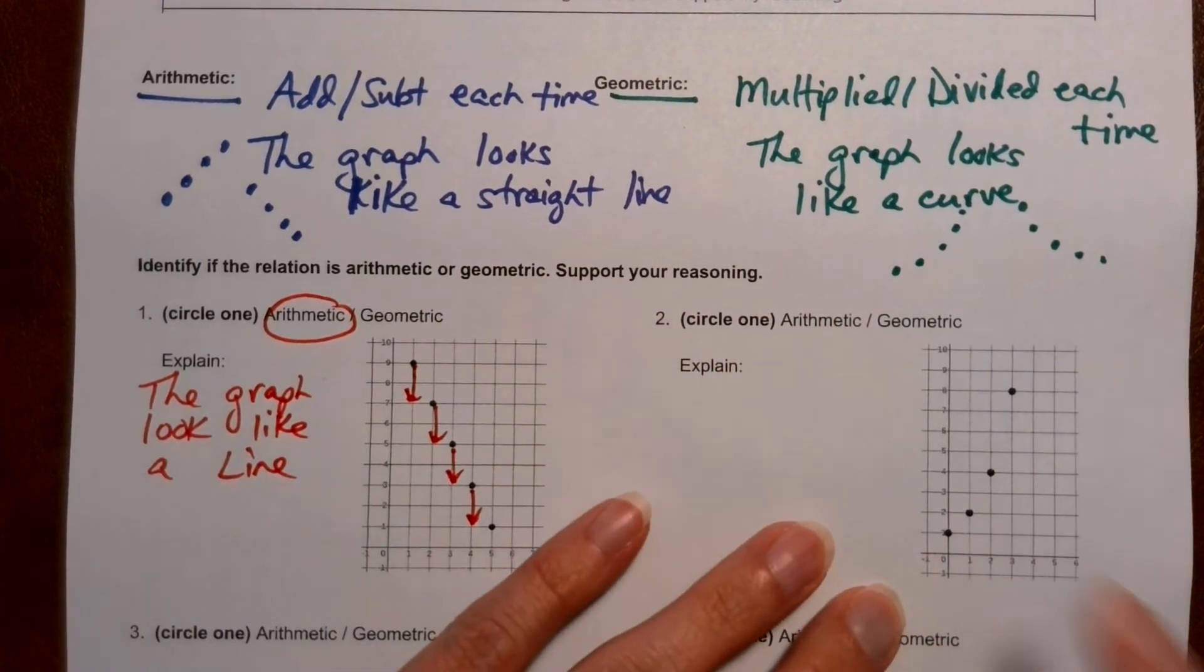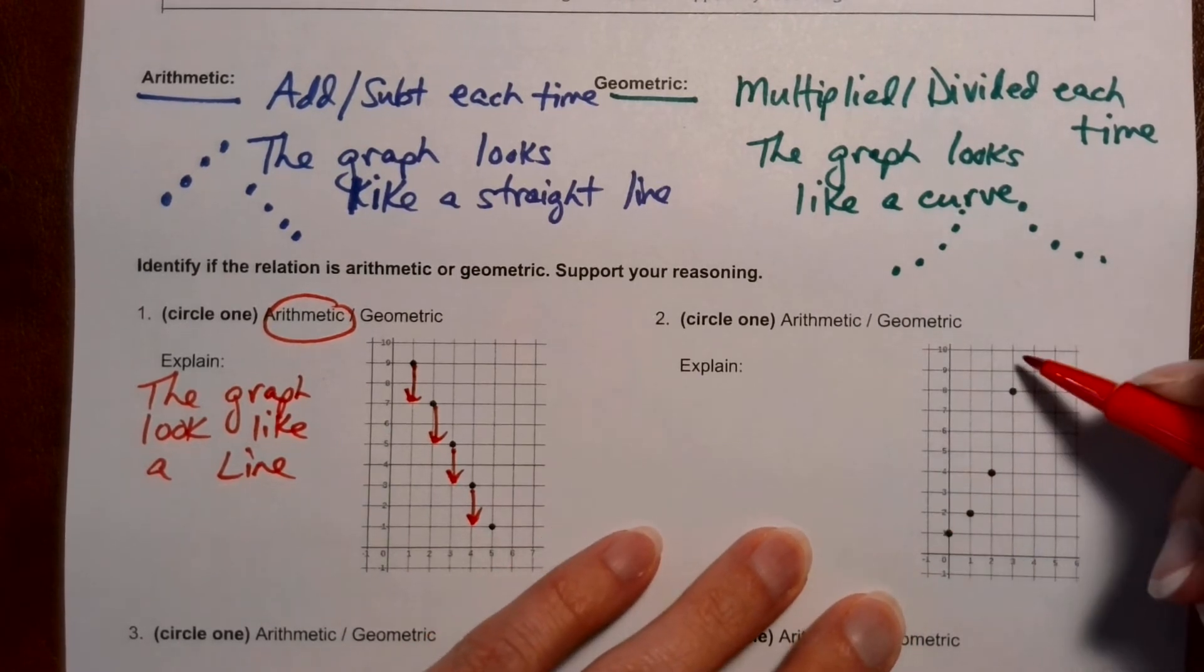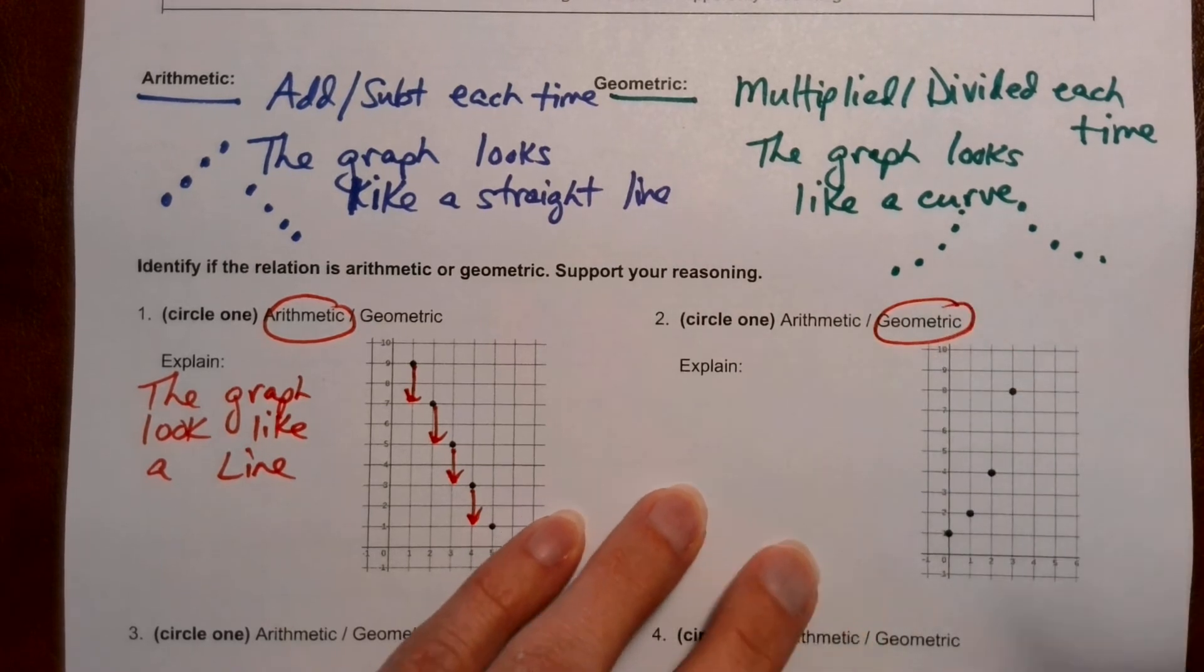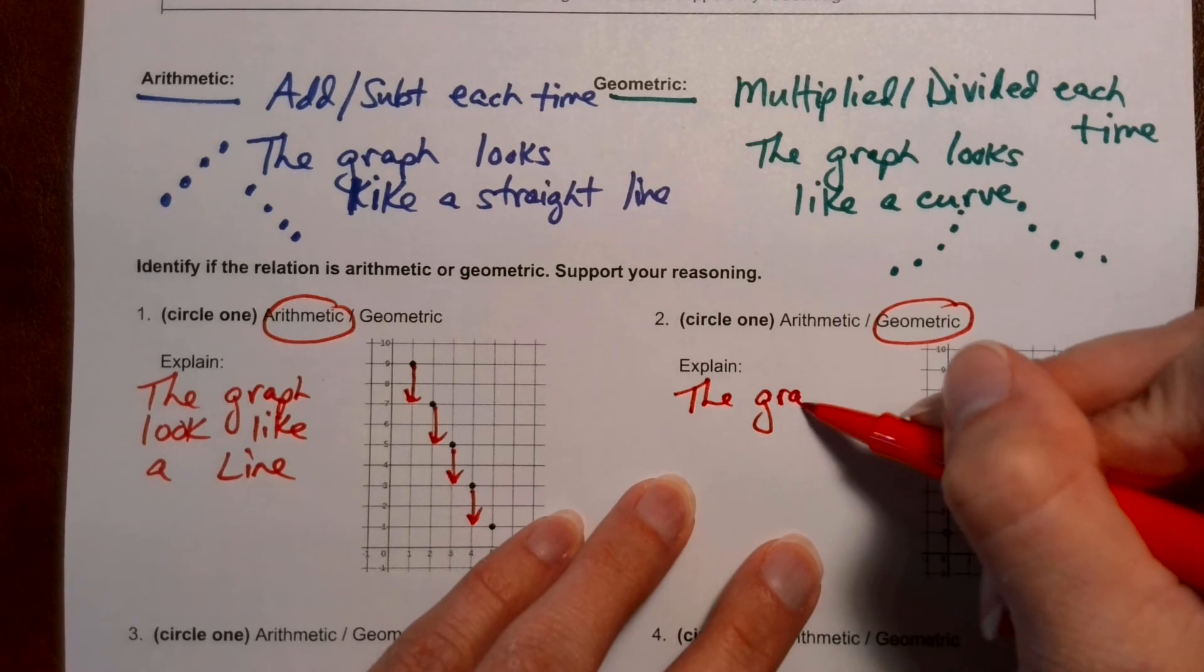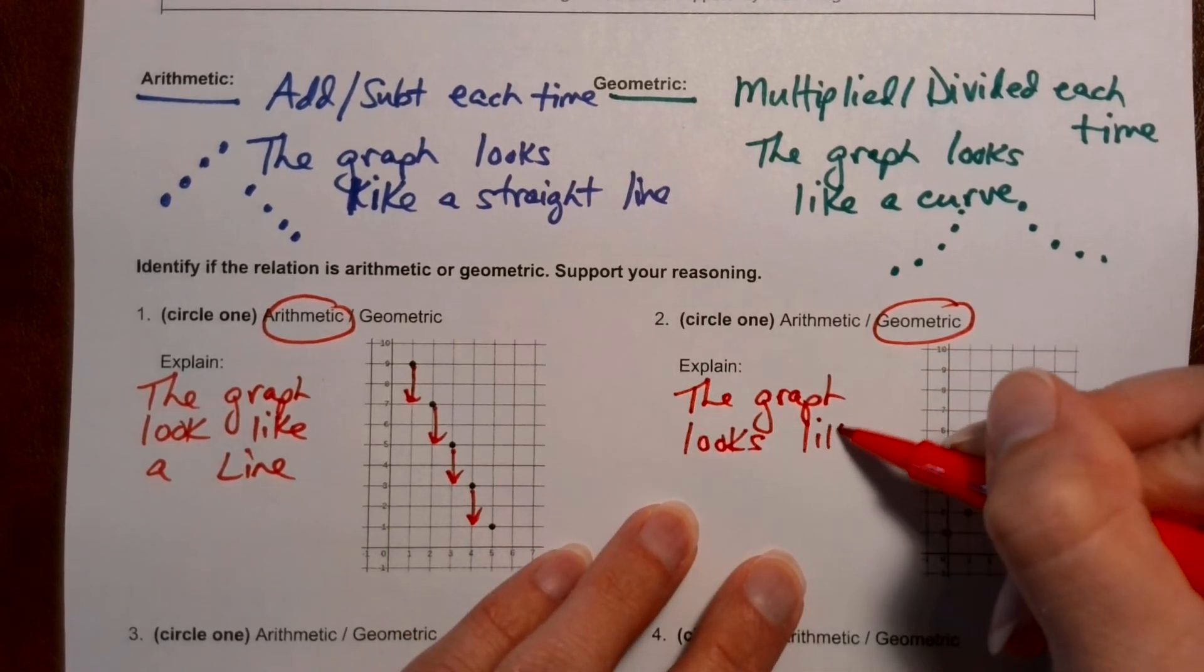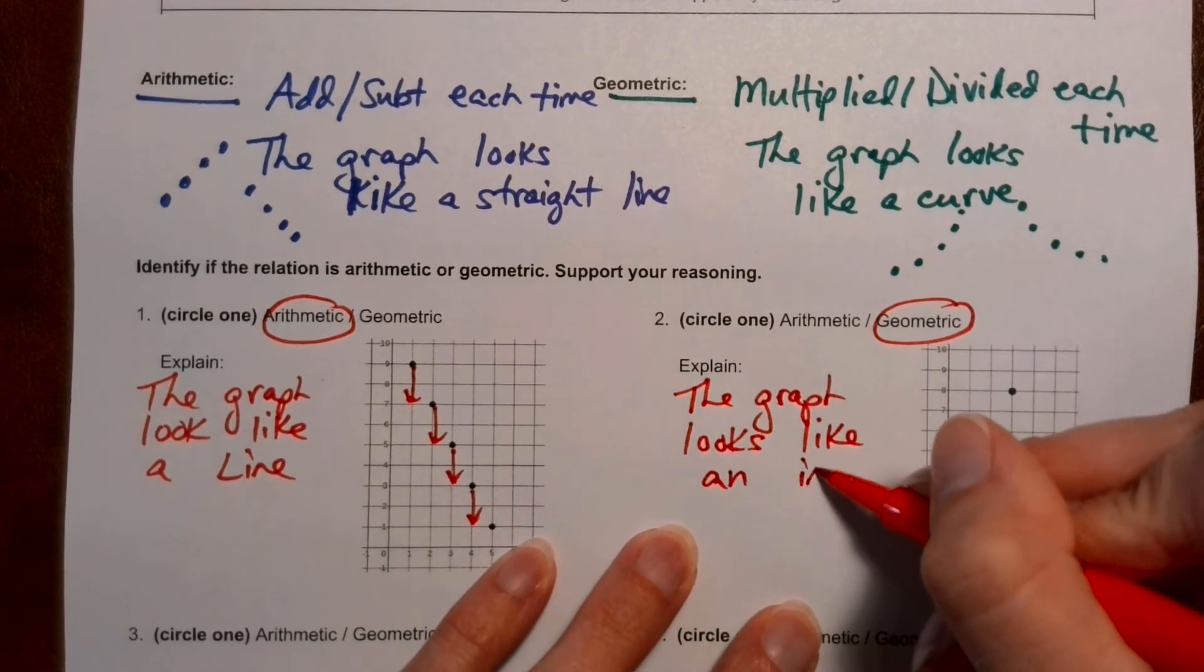Let's look at number two. Okay, do these points line up? No, these points are a curve. That means it's geometric. And a nice quick sentence would be to say the graph looks like a curve. In fact, I'm going to say an increasing curve.